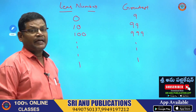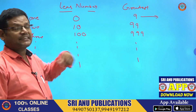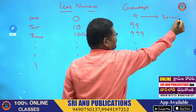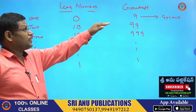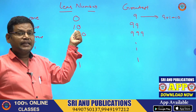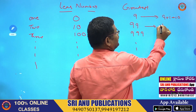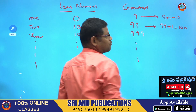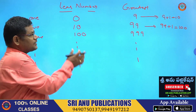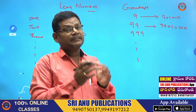If you observe, the greatest number plus 1 gives the next least number. Suppose the greatest single digit number is 9; 9 plus 1 is 10, which is the least two-digit number. Similarly, the greatest two-digit number 99 plus 1 gives 100, which is the smallest three-digit number. Like this, we can form any number using only the digits 0 through 9.